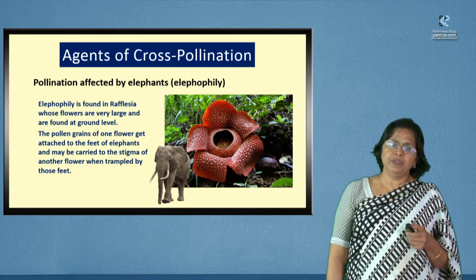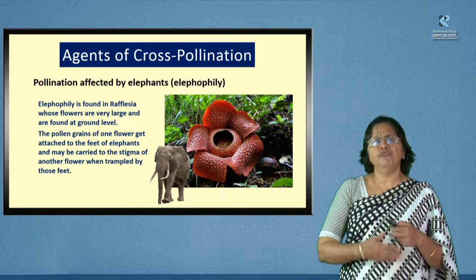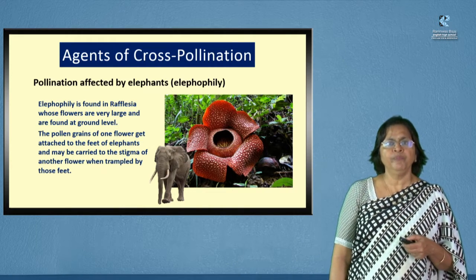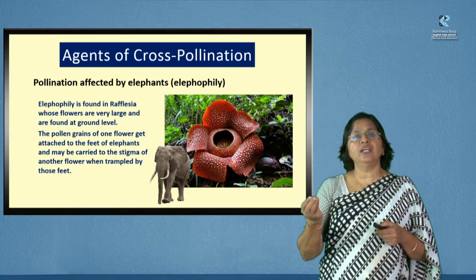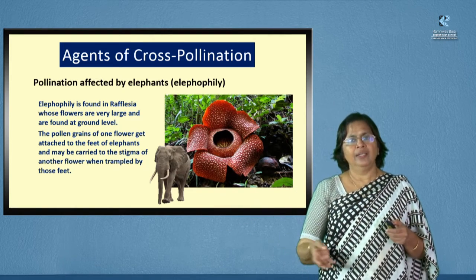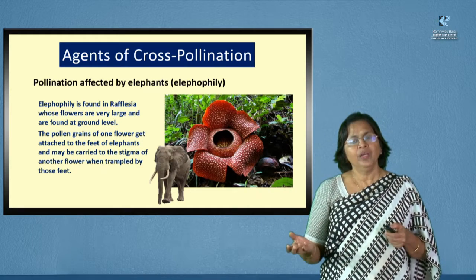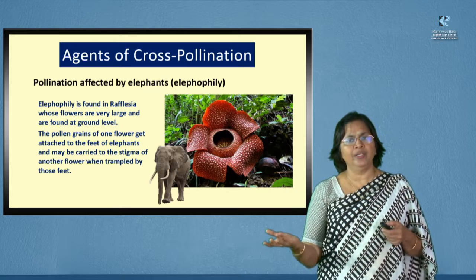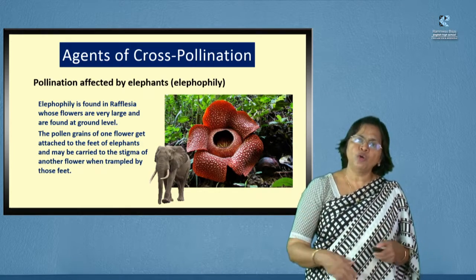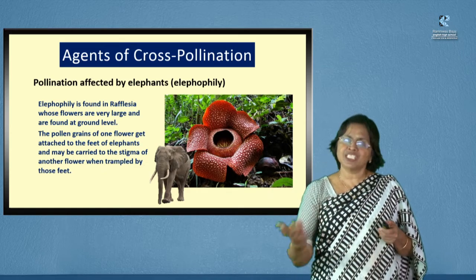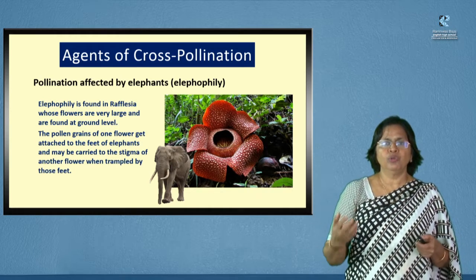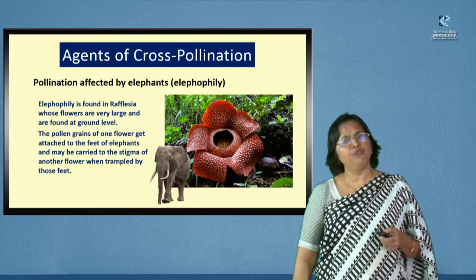A very interesting example is seen in the African flower called Rafflesia. It is a very huge flower growing close to the ground. When it is fully matured, the pollen gets stuck to the feet of an elephant as it walks through the jungle and over this large flower. While the elephant moves around, it may walk over another Rafflesia flower with a matured stigma, and the pollen gets stuck to that matured stigma, affecting pollination. This condition — elephant-pollinated flower — is called elephophily.